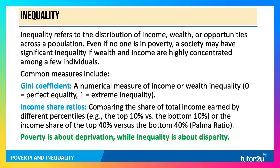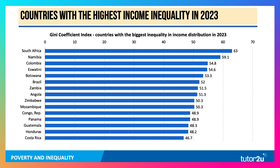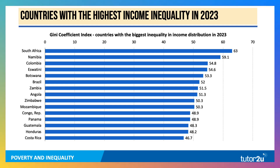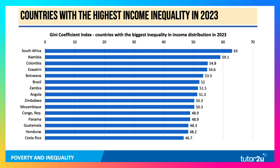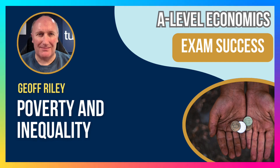These are the countries in the world in 2023 with the highest Gini coefficient, converted to an index so the maximum score is 100. It's widely regarded that any figure above 40 is very high inequality. South Africa and Namibia are a long way ahead in terms of the highest income inequality, but countries like Brazil, Zambia, Mozambique, and Costa Rica also have very high income inequality as measured by the Gini coefficient.